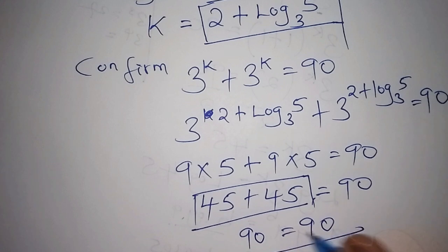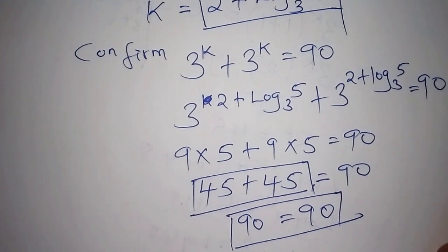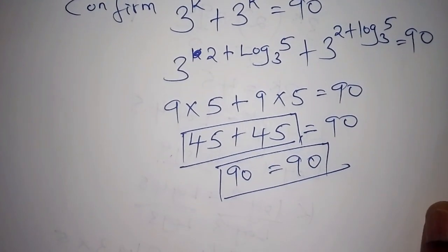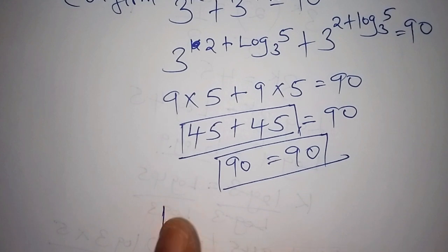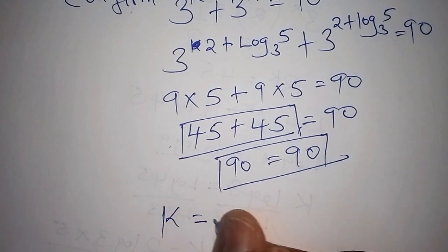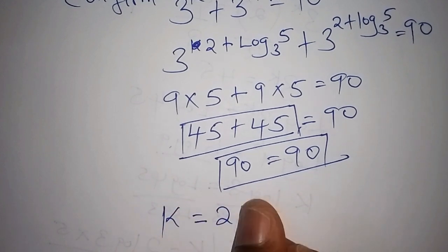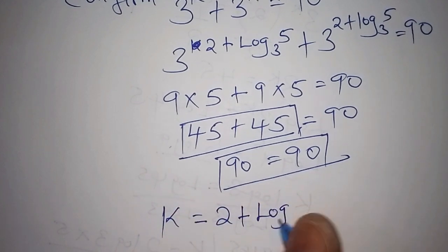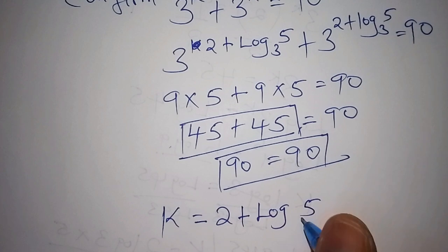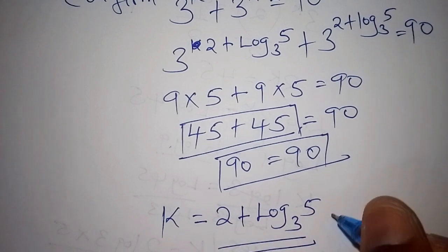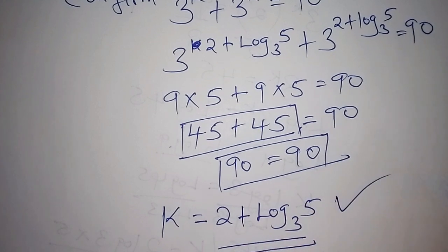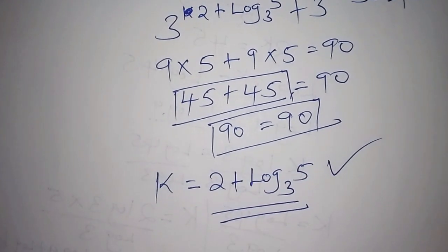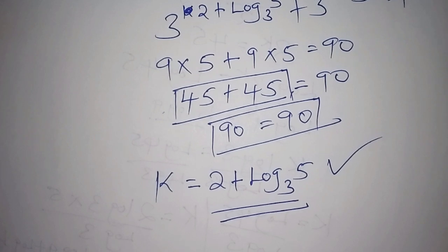So we can now justify that the value of k is equal to 2 plus log base 3 of 5. If you found that as your answer, then you scored it right. I want us to stop there and see you in our next video.